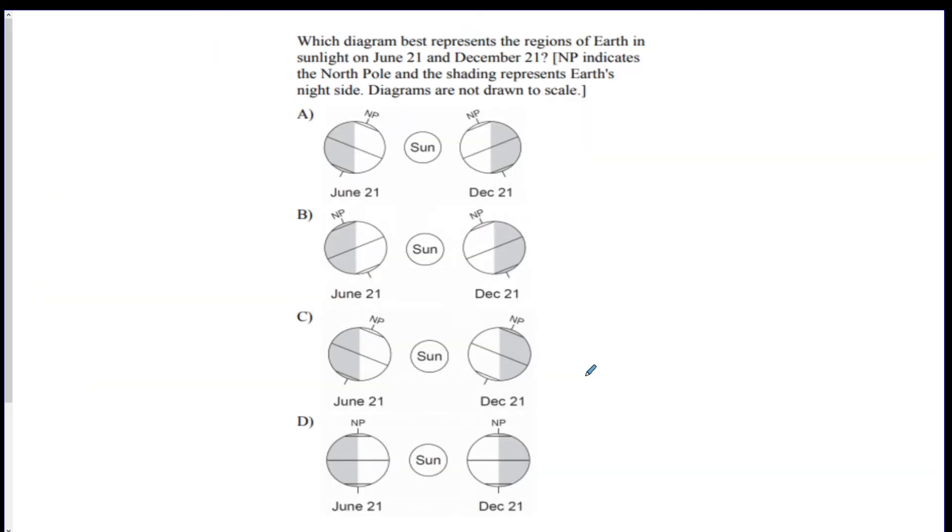A couple practice questions here. Check out the question, see if you can get the answer right, and then I'll go over the explanation. This one says, which diagram best represents the regions of Earth in sunlight on June 21st and December 21st? The NP indicates the North Pole, and the shading represents the night. So you want one to say June 21st and one to be oriented as December 21st. Take a second to figure it out.